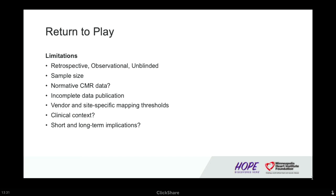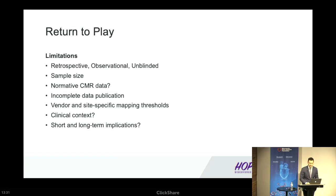Despite all these data, we must acknowledge notable limitations before drawing concrete conclusions. These include the retrospective, observational nature of most studies, reporting subclinical findings with lack of control groups and normative data — particularly in the athletic population. There are also vendor and site-specific variations in parametric mapping thresholds, making interpretation and generalizability very difficult. Overall, we don't know the short and long-term implications of these findings, particularly in the presence of questionable or absent symptoms, pointing to the need for larger, multicenter, prospective randomized controlled trials.